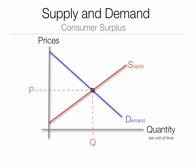Now, in the old supply and demand model, we have an equilibrium price. Consumer surplus is the area above the equilibrium price. Producer surplus is the area below the equilibrium price, which means there are people that would be willing to supply at a lower price. But in this market, there's only one supplier.